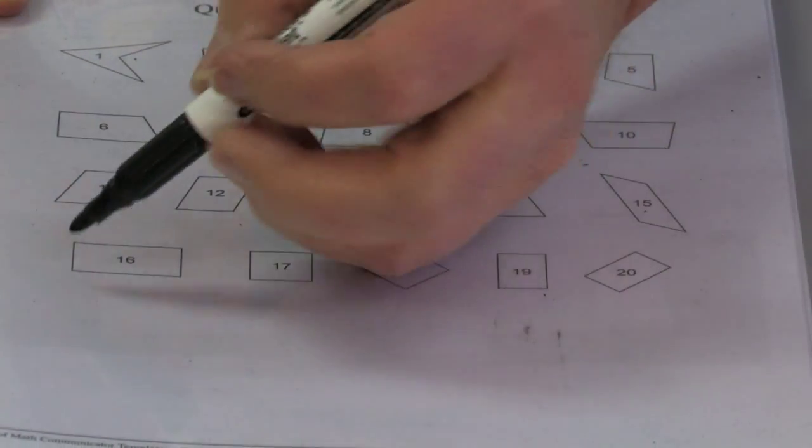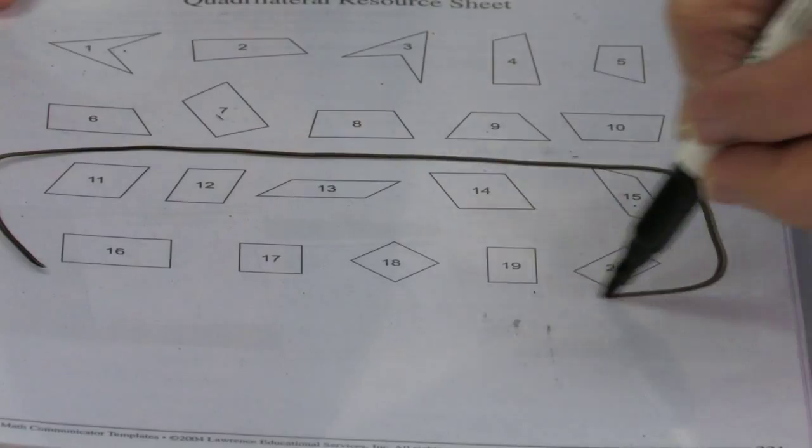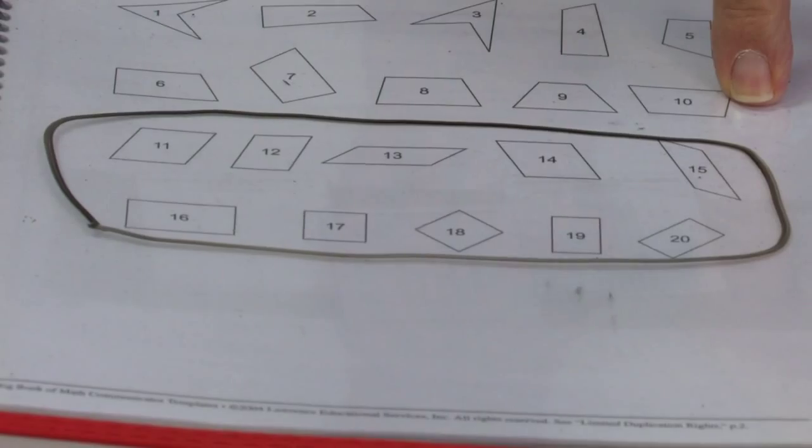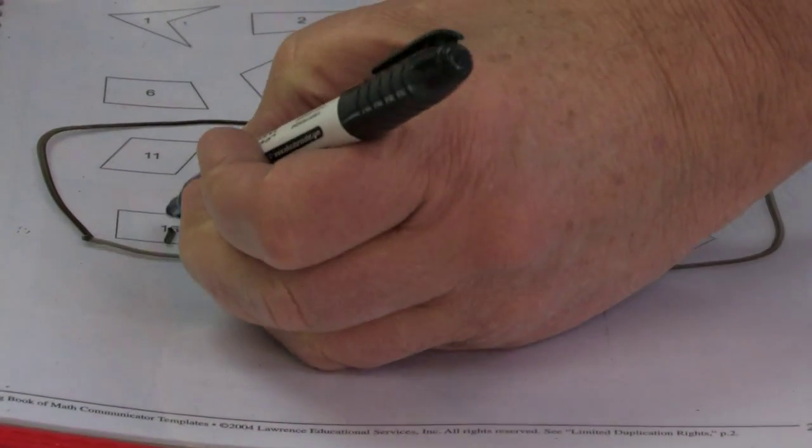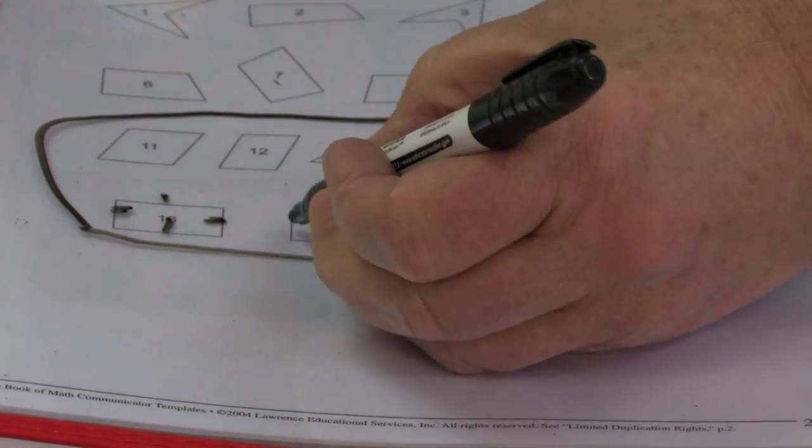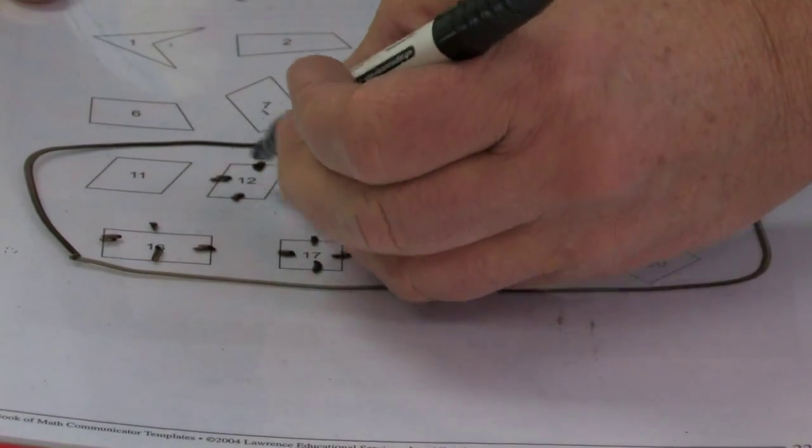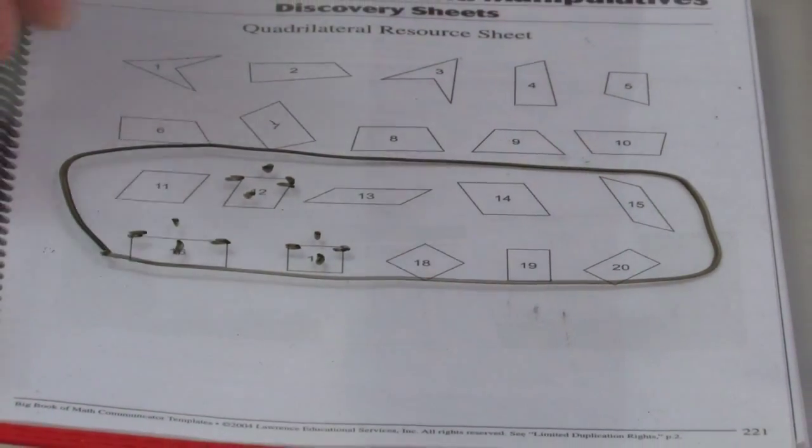Next question, what we can do is circle all of these quadrilaterals. How are these quadrilaterals different from the quadrilaterals that we just did? Well, these have two pairs of parallel sides. These would all be called parallelograms.